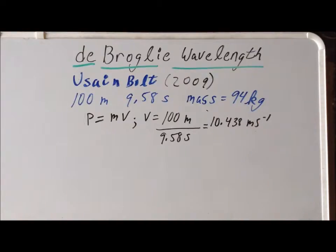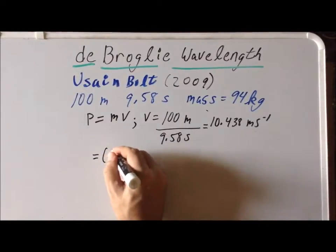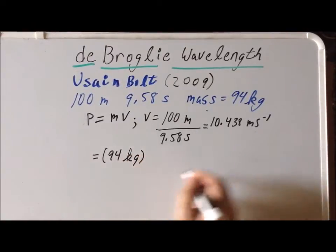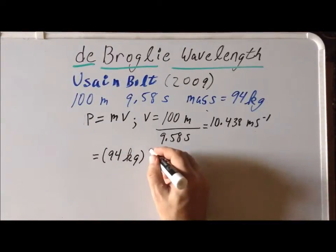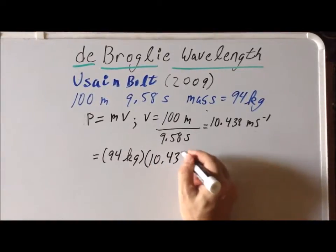So with these two pieces of information, we can calculate his momentum. So we have 94 kilograms times the velocity, which is 10.438 meters per second.